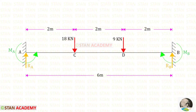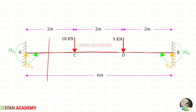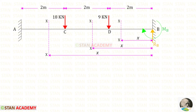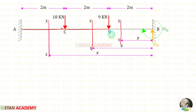Now we have to make sections in this beam. In this beam there are three different part sections: AC, CD, and DB. So we have to make three sections — one section in AC, one section in CD, and one section in DB.